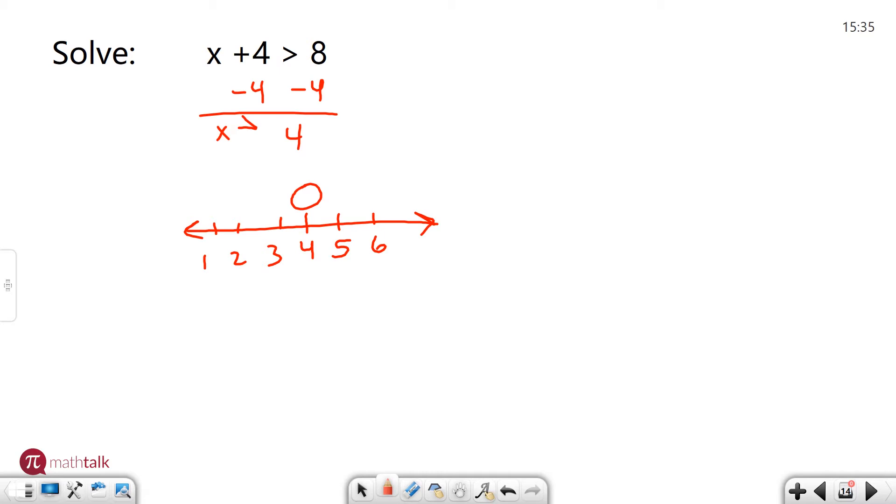And I need to find all the numbers that are greater than 4. And so all the numbers that are greater than 4 is everything over here. And I'm going to draw an arrow to represent that. What this tells me is that the solution to my inequality is any number that's greater than 4. The open circle represents the fact that it doesn't include the number 4 itself.